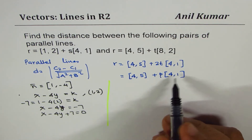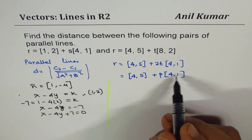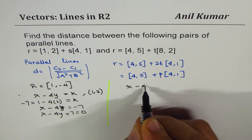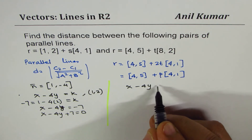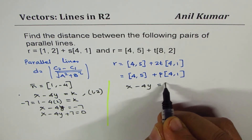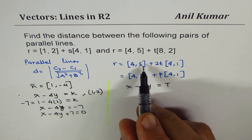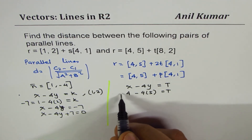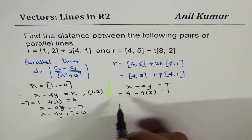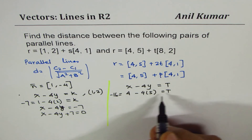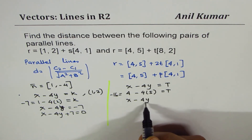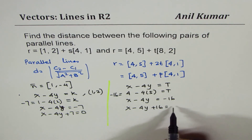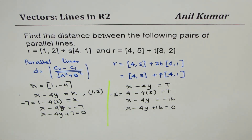For the second line, using the same normal (1, -4), we write x - 4y = t. Substituting point (4, 5): t = 4 - 20 = -16, so the equation is x - 4y + 16 = 0. That gives us both lines in standard scalar form.